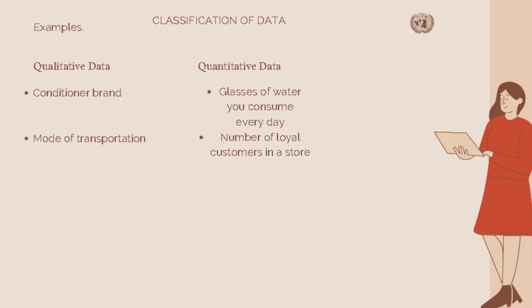For examples of qualitative data, we have a conditional brand and mode of transportation. For quantitative data, examples include the glasses of water you consume every day, the number of loyal customers in a store, and hours spent browsing the internet.